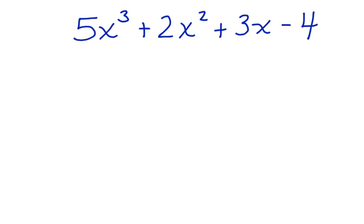We can organize polynomials too. Sometimes you'll get them out of order, and sometimes you'll get them in order. Let's take a look at a polynomial that's in order: 5x cubed plus 2x squared plus 3x minus 4. Notice that the exponents go in order from largest to smallest.